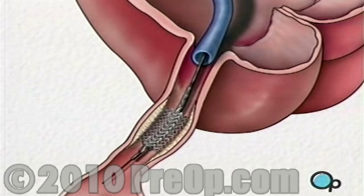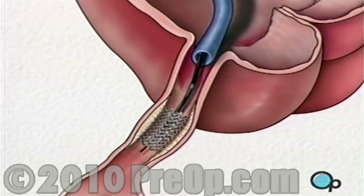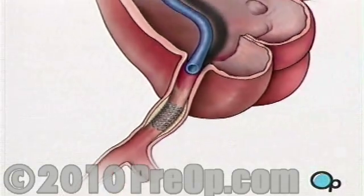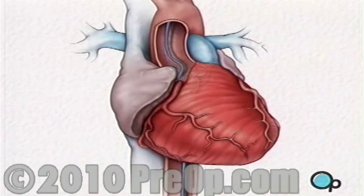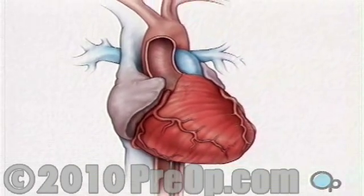Finally, after a thorough investigation of the region, the catheter and guide wire are withdrawn. The stent remains permanently to provide support to the artery and to resist the build-up of plaque. The dye that had been injected will break up and leave your body as waste. Slight pressure is applied to the incision in your leg in order to prevent bleeding.